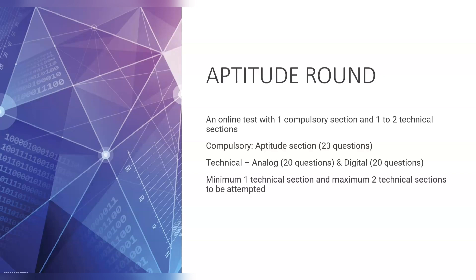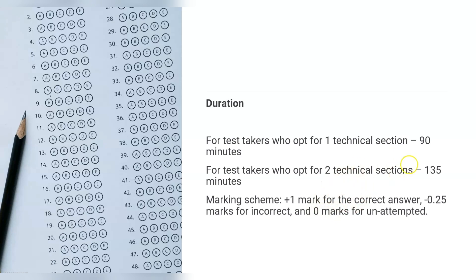Regarding the time limit — this is a rough idea, not an accurate figure. If you are attempting one technical question plus aptitude questions, the duration will be 90 minutes. If you attempt two technical questions, it can be 135 minutes. For marking in the aptitude round, which is generally MCQ-based, you get plus one mark for a correct answer and minus 0.25 marks deducted for an incorrect answer.